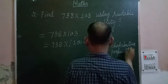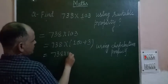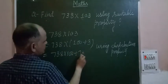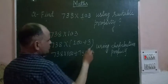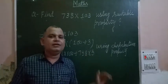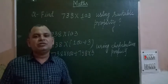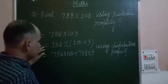Using the distributive property, we expand it as 738 into 100 plus 738 into 3. The distributive property says if a number is outside the bracket, when we open the bracket this number multiplies each term inside the brackets. So 738 multiplies both 100 and 3.